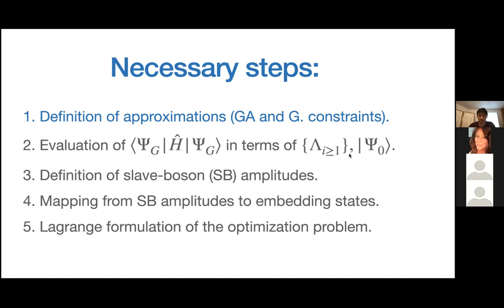The second part is about evaluating the variational energy in terms of our variational parameters — a generally very difficult problem. Without any approximation this requires variational Monte Carlo, but thanks to simplifications we can carry out the calculation in a much more manageable way. The third step involves the definition of the slave boson amplitudes — a change of variables that is key because it relates the GA with the rotational invariant slave boson theory.